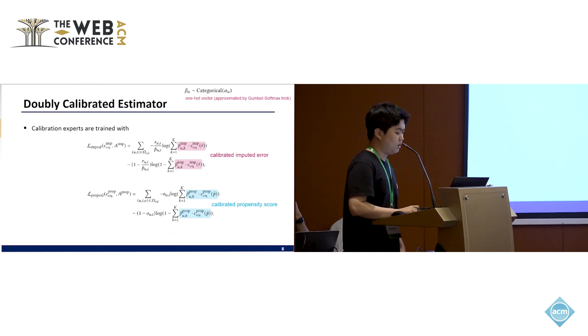So each user is assigned to one of the calibration experts. The calibration expert is C subscript omega K. So C given R tilde is the calibrated imputed error, and since beta is a one-hot vector, we just take the one value from one calibration expert.